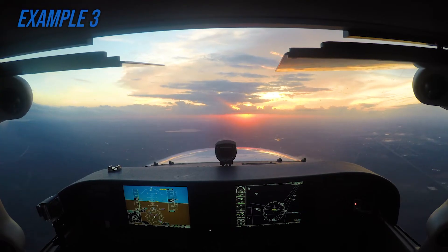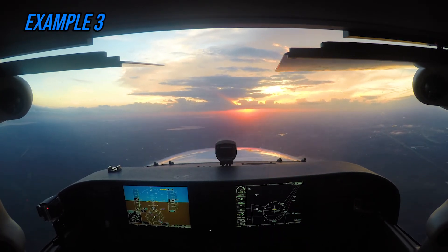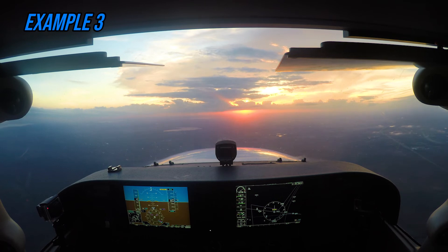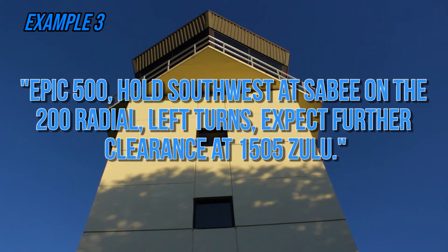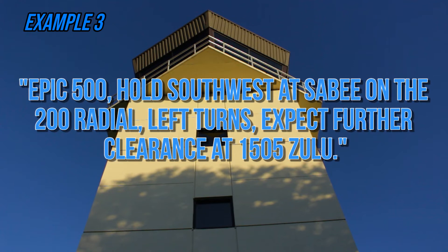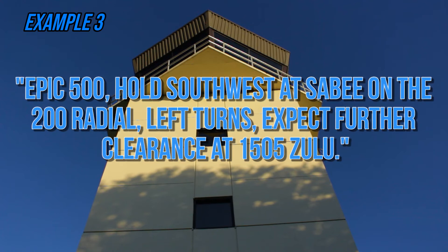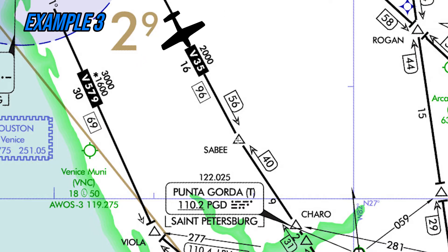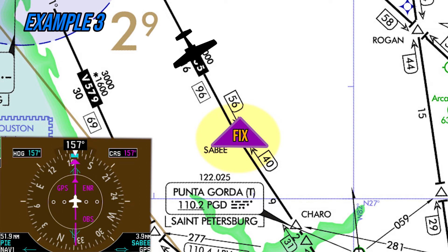Example 3. If a pilot was flying southeast along Victor 35 at 4,000 feet MSL and air traffic control issues a holding clearance, the pilot would repeat their holding clearance to ATC and fly directly to the Sabi fix. The pilot would also slow the aircraft to at least 200 knots because they are holding below 6,000 feet MSL, at least 3 minutes prior to reaching Sabi.